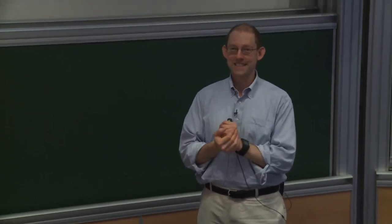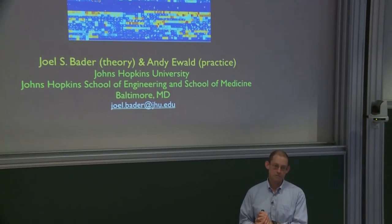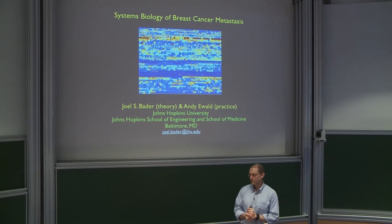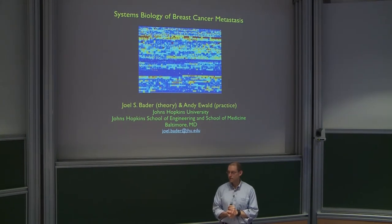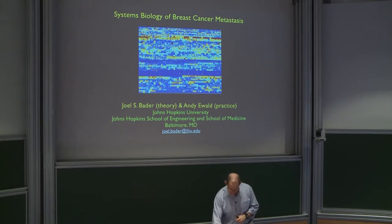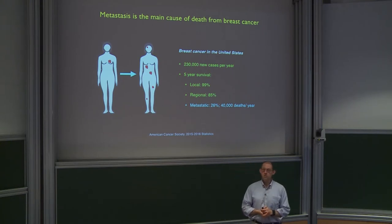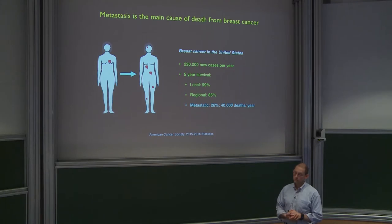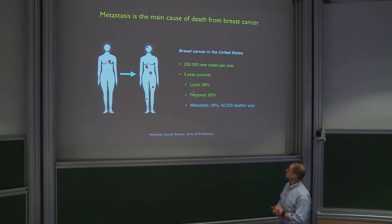Now I want to tell you in the remaining time about the organoid work. This is a cancer project. I did not know before working on this that for breast cancer, it's not the tumor that kills people — it's the metastasis, and that therapies to get rid of the primary tumor are not really effective if the tumor has already spread. Five-year survival for local or regional breast cancer is very good, but metastatic cancer once spread is only 26%. Metastasis is very difficult to study.